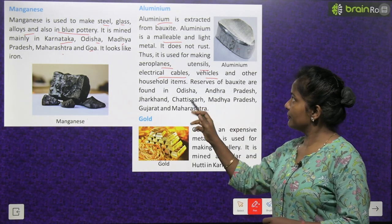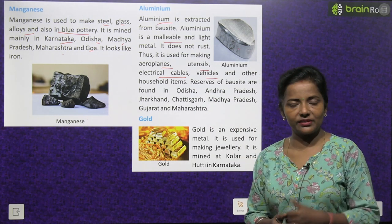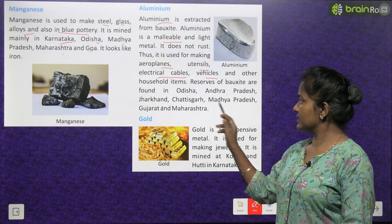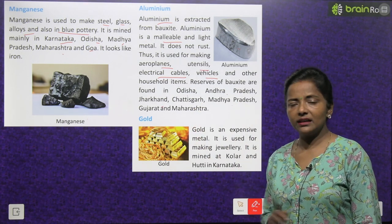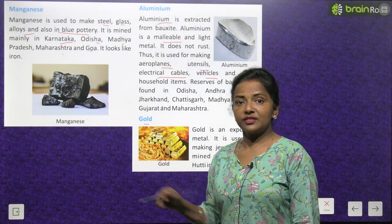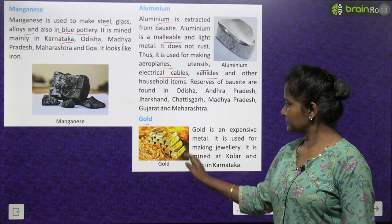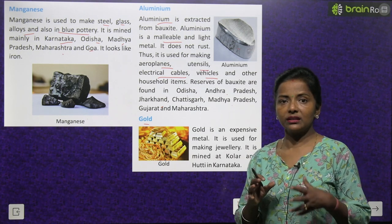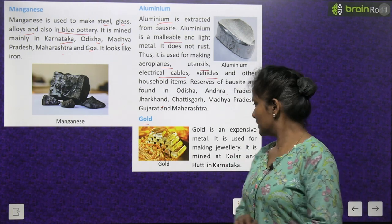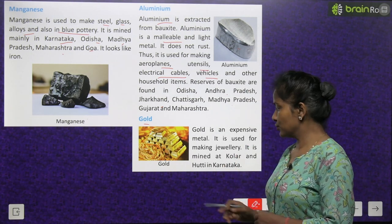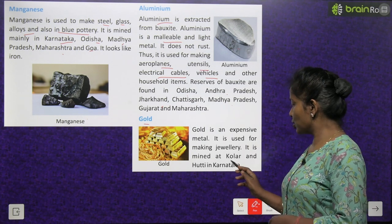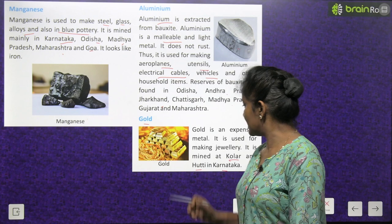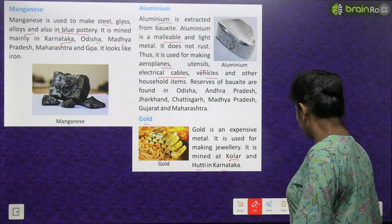Reserves of bauxite are found in Odisha, Andhra Pradesh, Jharkhand, Chhattisgarh, Madhya Pradesh, Gujarat and Maharashtra. Then comes gold. Gold is an expensive metal — bahut mehenga metal hai gold. It is used for making jewellery. It is mined at Kolar and Hutti in Karnataka.